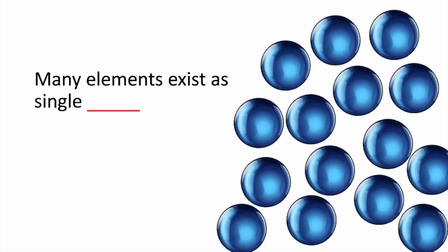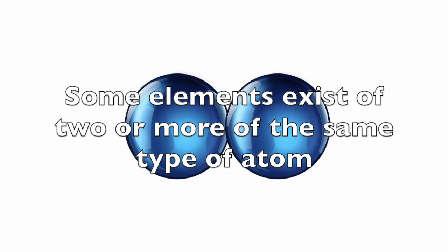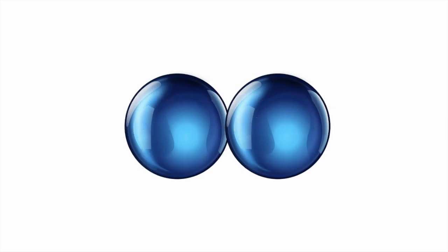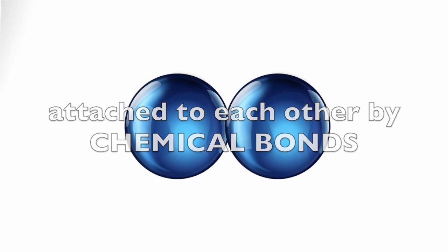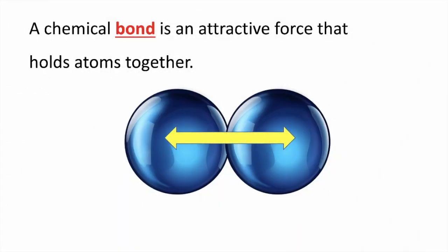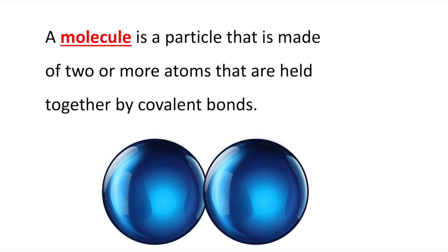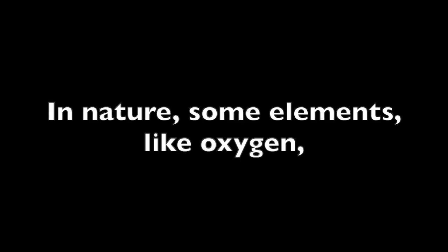Many elements exist as single atoms, but some elements exist as two or more of the same type of atom attached to each other by chemical bonds. A chemical bond is an attractive force that holds atoms together. A molecule is a particle that is made of two or more atoms that are held together by covalent bonds, and we'll learn more about these later. In nature, some elements like oxygen are most commonly found as molecules.